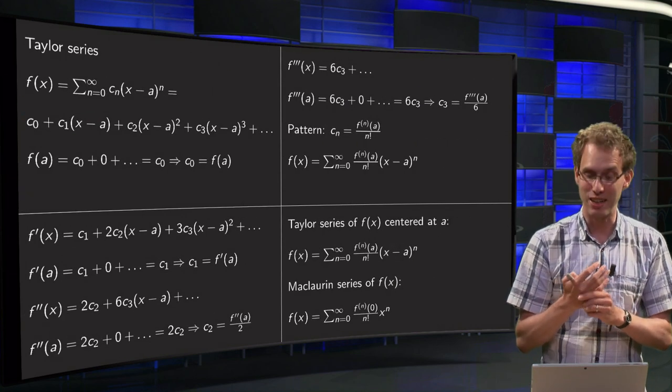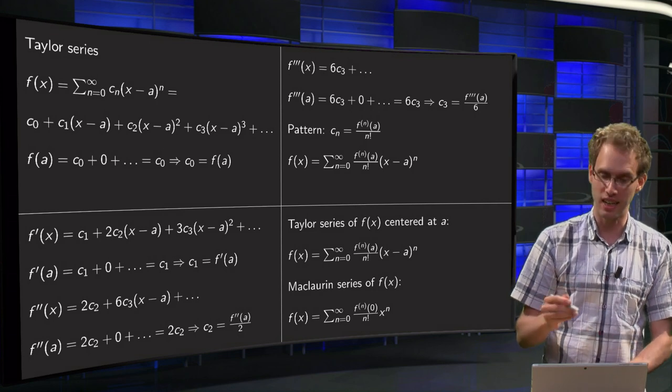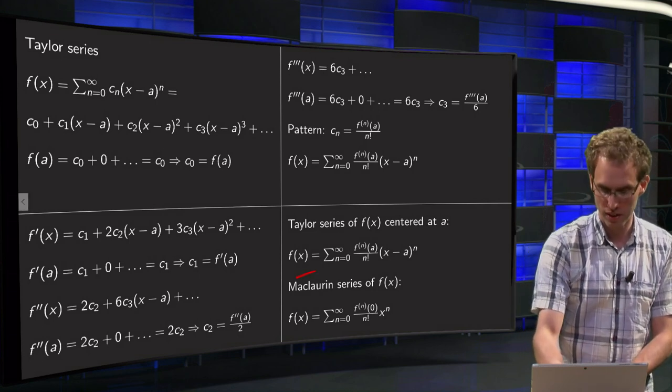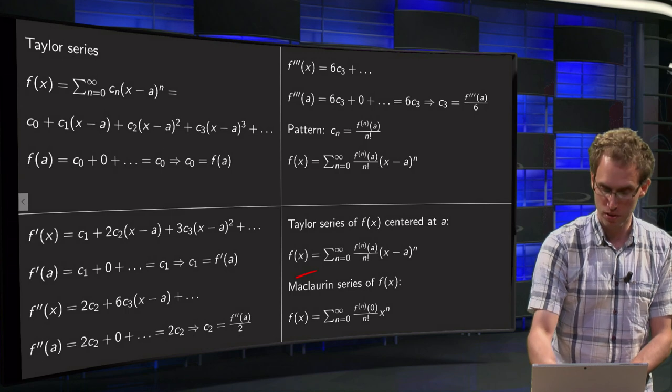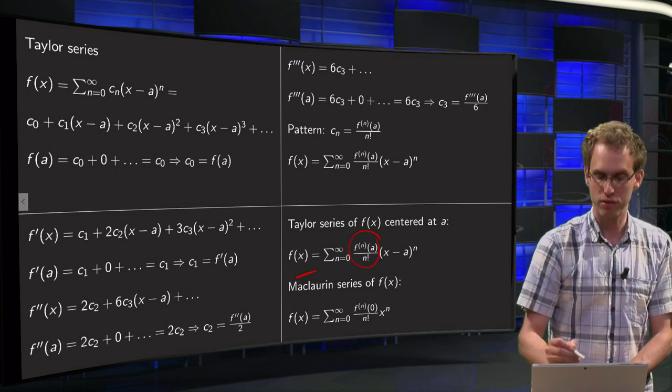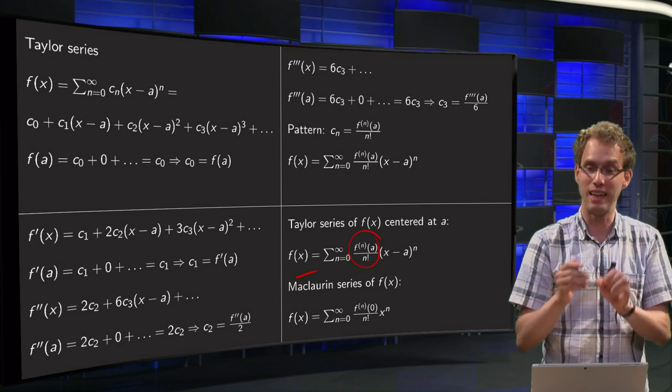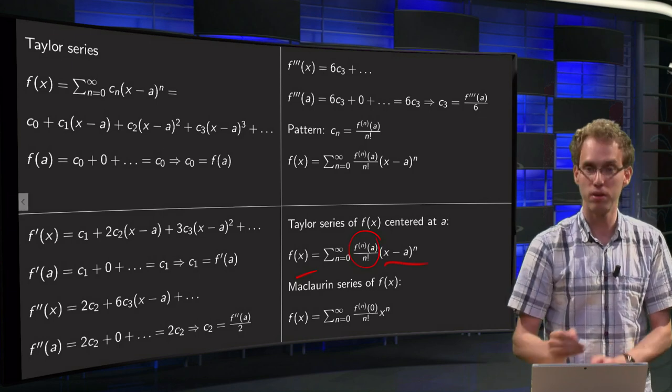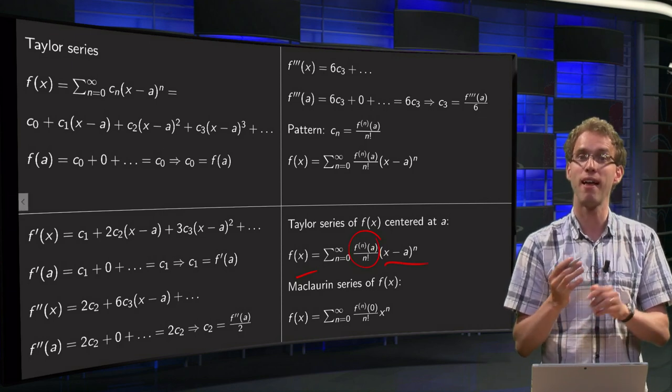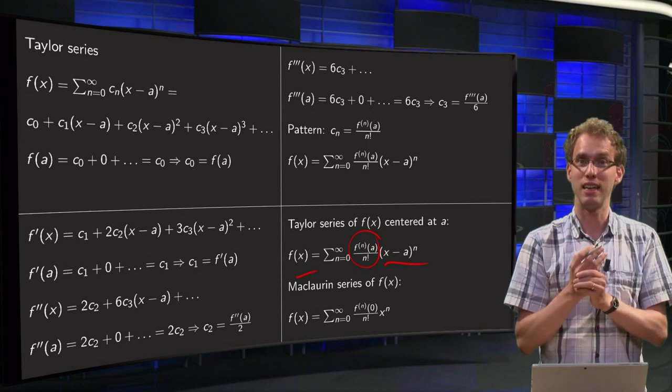This series is called the Taylor series of f(x) centered at a. So Taylor series f(x), sum n from 0 to infinity, cn of this form: n-th derivative of f at a divided by n factorial, times (x-a) to the power n. Taylor series centered at a.